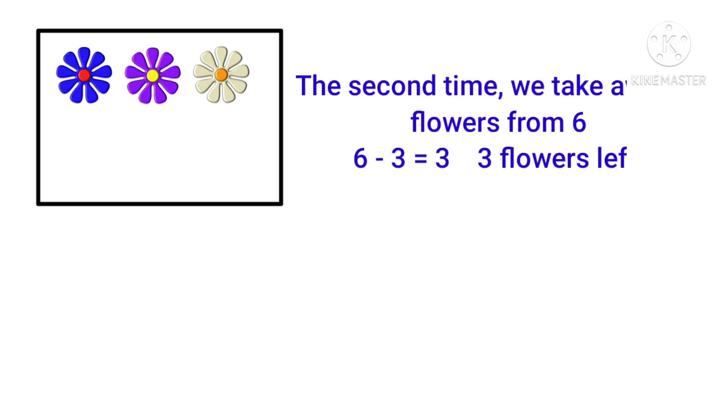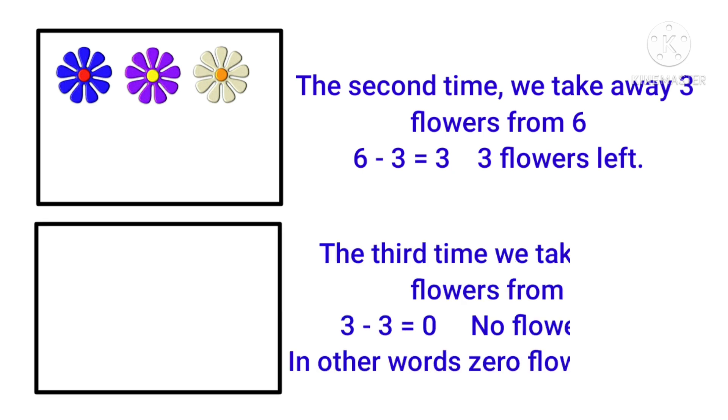The second time we take away 3 flowers. 6 minus 3 is equal to 3. 3 flowers are left. The third time we take away 3. Now no flowers are left. In other words, 0 flowers are left.